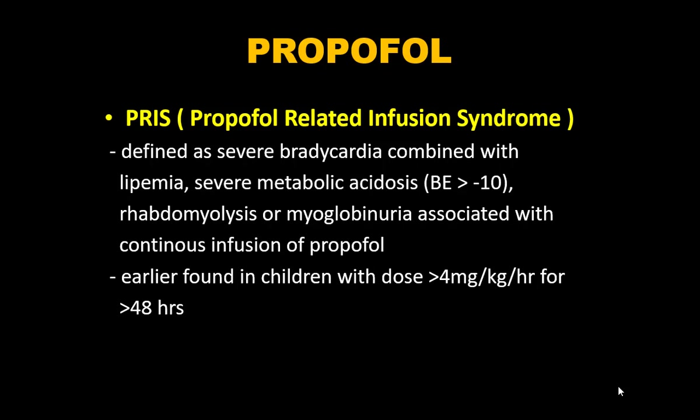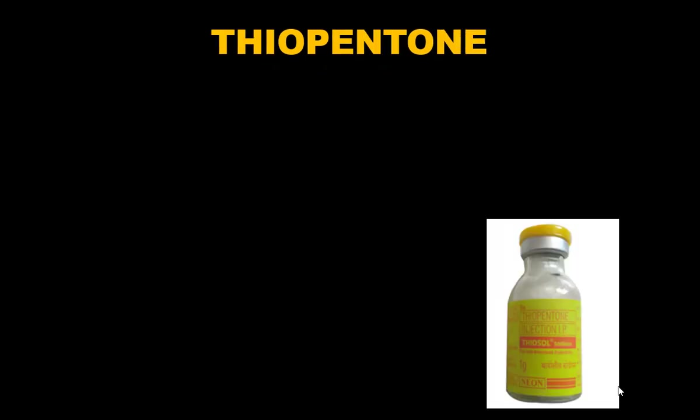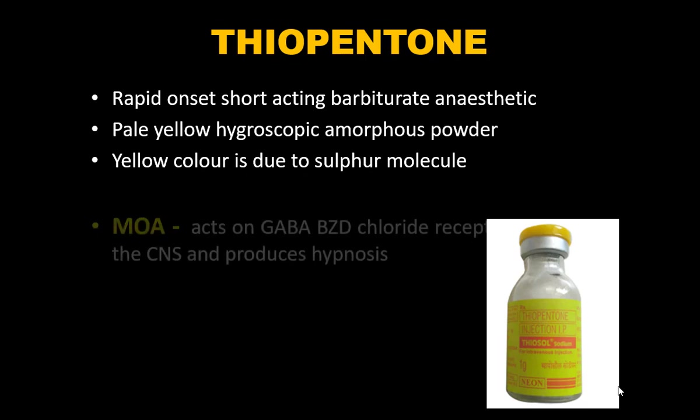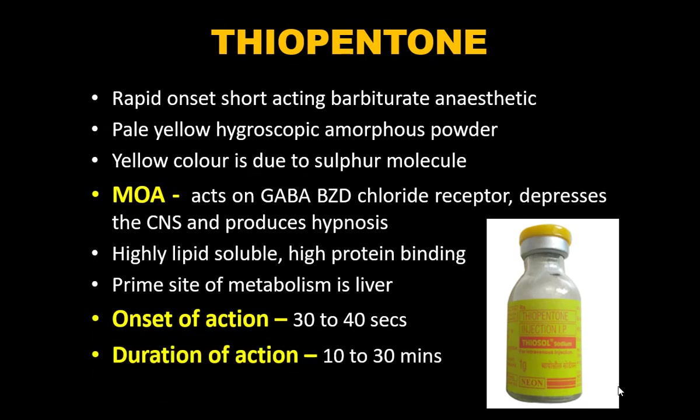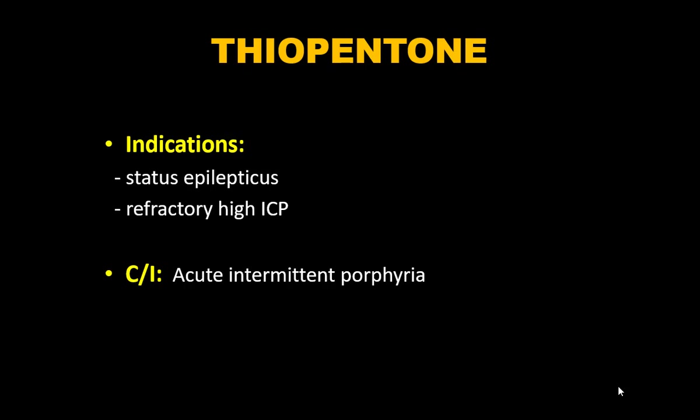Thiopentone is a barbiturate anesthetic — a pale yellow hygroscopic amorphous powder; the yellow color is due to the sulfur molecule. It acts on GABA-benzodiazepine receptors, is highly lipid-soluble and protein-bound. Primary metabolism is hepatic. Onset is 30–40 seconds, duration is 10–30 minutes. In the ICU it is seldom used — mainly for refractory status epilepticus.